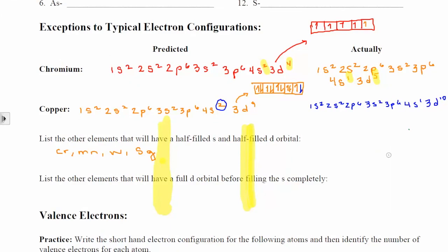These exceptions occur for copper (Cu), silver (Ag), gold (Au), and roentgenium (Rg). So what we've covered today: shorthand electron configuration and the exceptions to electron configuration. For homework, I want you to write the shorthand electron configuration of silver (Ag), which will incorporate both shorthand writing and the exceptions. And that's all I've got for you.